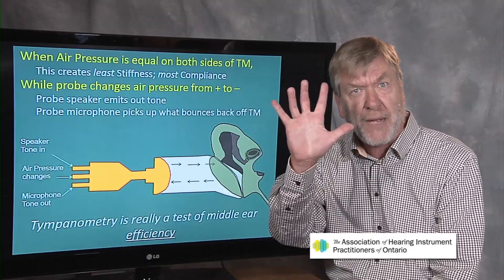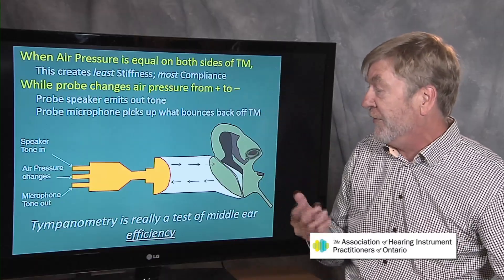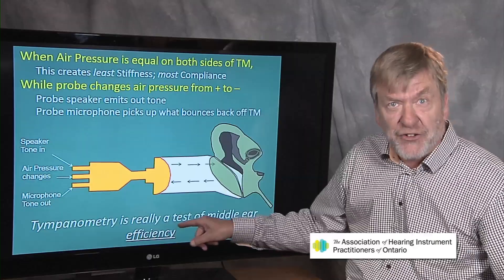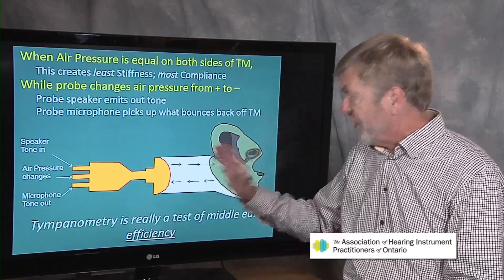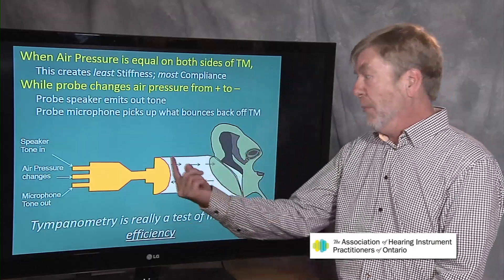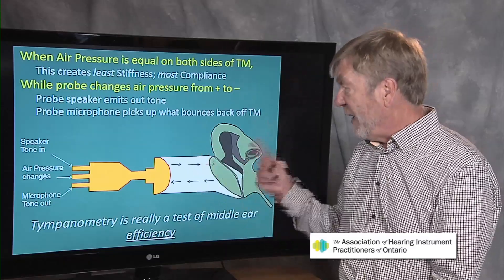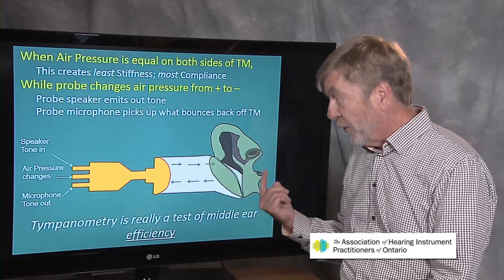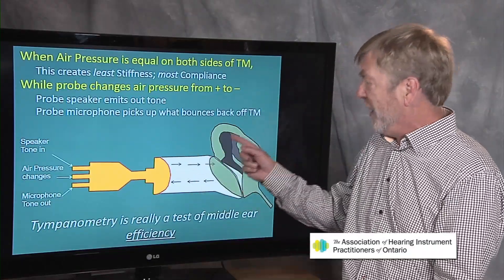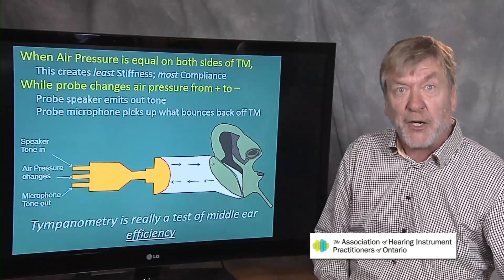The test takes about five minutes maximum, and that's why it's also of value. It's really a test of middle ear efficiency. If the air pressure is even-steven on both sides of the drum, most sound will go through. And if most sound goes through when the outer ear canal air pressure is at room air pressure, then we know the air pressure in the middle ear space is room air pressure.